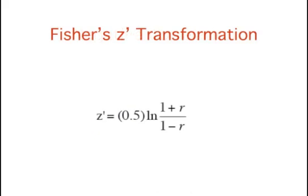Referring back to the SAT example, for which rho equals 0.60, suppose you wanted to know the probability that in a sample of 19 students, the sample value of r would be 0.75 or higher.